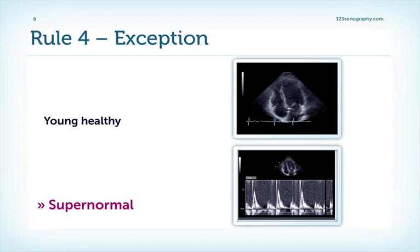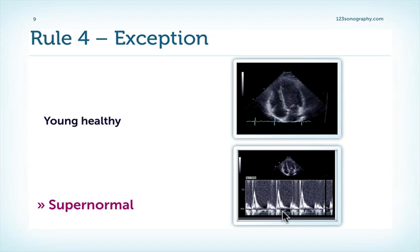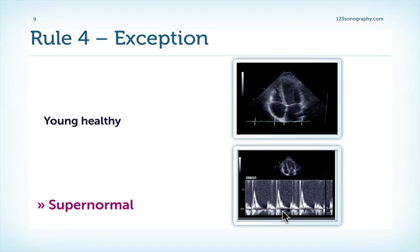There is one exception to this rule. In young, very healthy adults, you will have supernormal diastolic function, which means that during early diastole we have suction which causes a very high E wave and thereby a pattern which looks very similar to a restrictive filling pattern. However, in reality you will never have a problem to distinguish the two. Patients with supernormal pattern are young, healthy and often athletes.